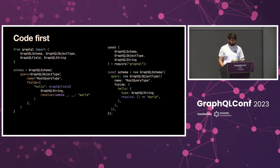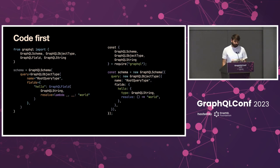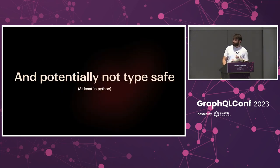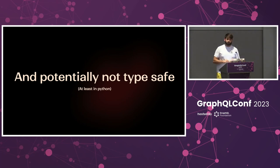In Code First, you pretty much write both the schema and the resolver at the same time using code. In this case, we also have Python and JavaScript. We're using a schema-building pattern — using classes to instantiate the schema, the object type, and the fields, and also passing resolvers to the fields. This code feels quite verbose and potentially not type-safe, at least in Python.